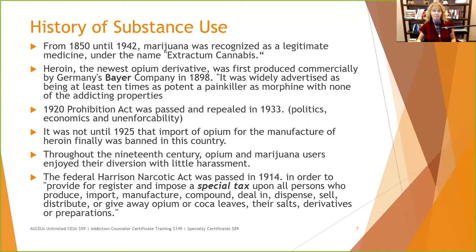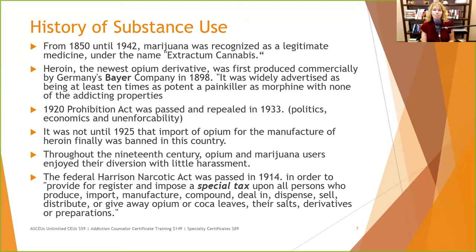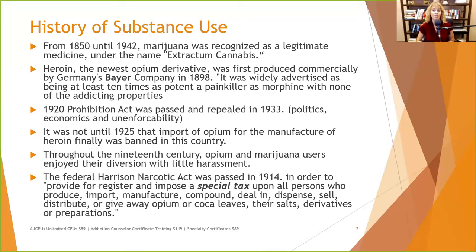In 1925, the import of opium for the manufacture of heroin was finally banned. So alcohol was banned in 1920, opium in 1925, and alcohol came back in 1933. Throughout the 19th century, opium and marijuana users enjoyed their diversion with little harassment — it wasn't until the 1900s they started saying this might be a problem. The Federal Harrison Narcotic Act was passed in 1914 to impose a special tax upon all persons who produced, imported, manufactured, compounded, dealt, dispensed, sold, distributed, or gave away opium or coca leaves, their salts, derivatives, or preparations. The government wanted their cut.